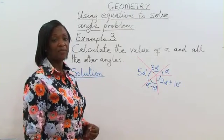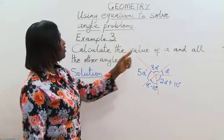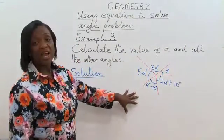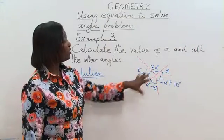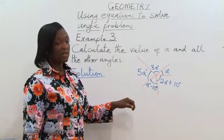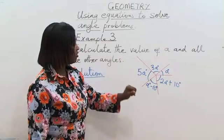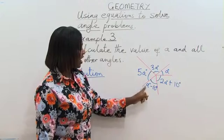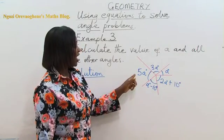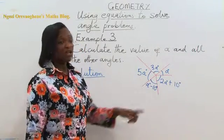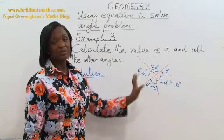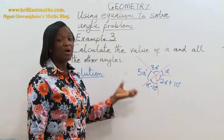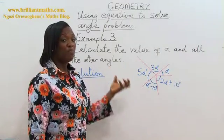Example 3 calculates the value of a and all the other angles. From the diagram, we have angles at a point. We have 3a degrees, a degrees, 2a degrees plus 10 degrees, a degrees minus 10 degrees, and then 5a degrees. The sum of all these angles is equal to 360 degrees because they are angles at a point.